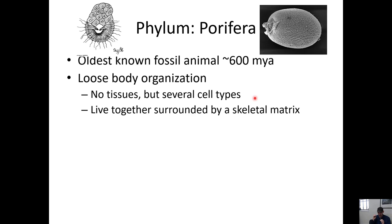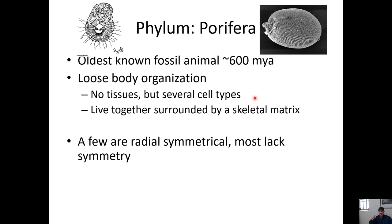This animal does not have tissues. It has cell types — different cell types — but they're not aggregated into tissues. These cells live together and they're surrounded by a skeletal matrix, like a secretion. That's the skeleton, and you all know this skeleton — it's what natural sponges are made out of that you might wash with in the shower or use on your car.